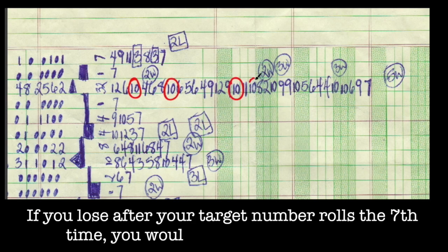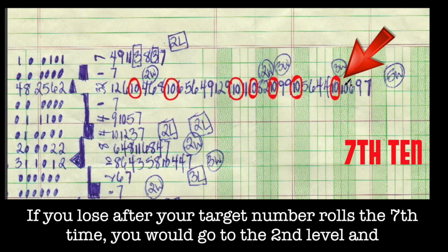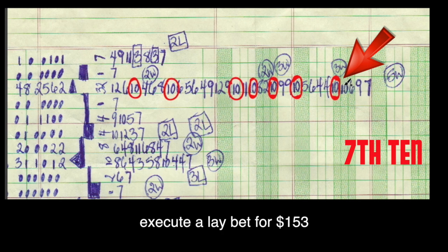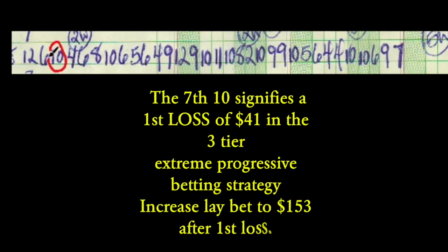If you lose after your target number rolls a seventh time, you would go to the second level and execute a lay bet for $153. The seventh ten signifies a first loss of $41 in the three-tier extreme progressive betting strategy.